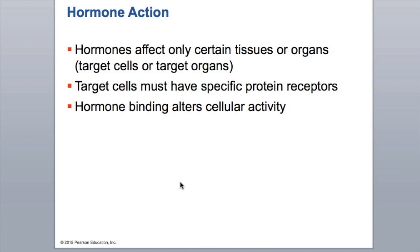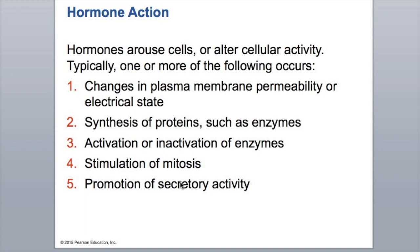Hormones only affect certain tissues or organs. Even though they are released through the body as a whole, it's like a key and a lock. Target cells have to have a specific protein receptor in order for that hormone to bind to it and alter that target organ's activity. The hormone is the key and the receptor on the target organ is the lock. The term hormone comes from the Greek word meaning to arouse — that's exactly what it does, hormones arouse or alter our cellular activity.